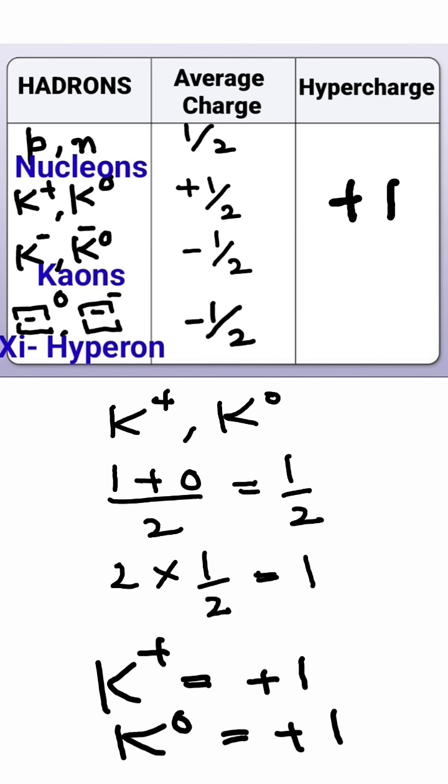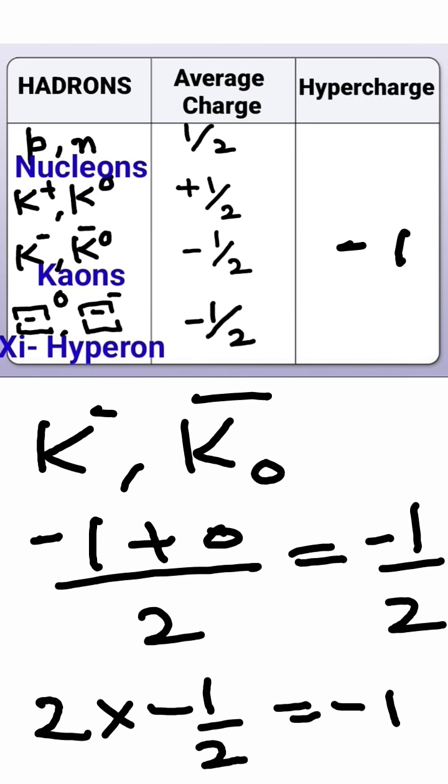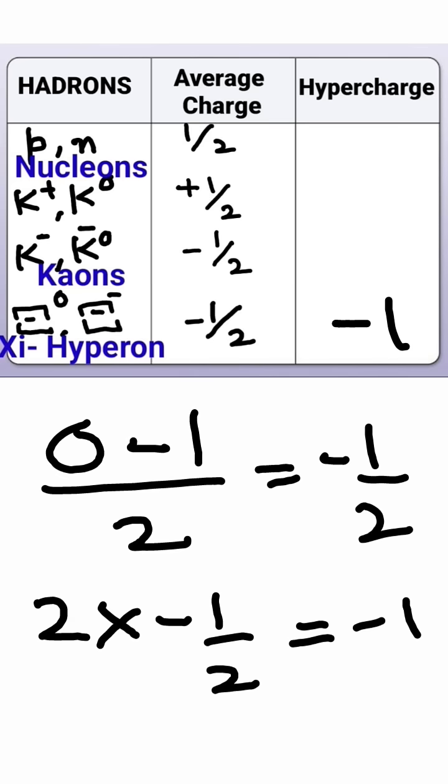Similarly for K on doublet, K negative and K anti-neutral, hypercharge is minus one. And for cascade hyperon, hypercharge is going to be minus one for each of them.